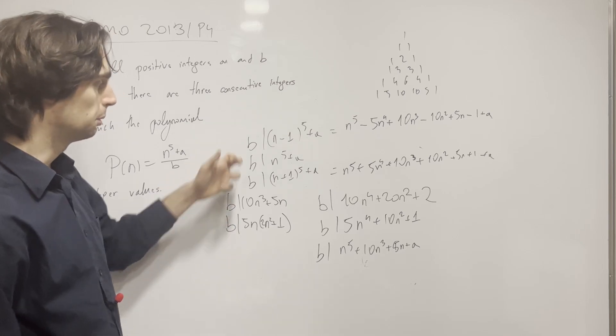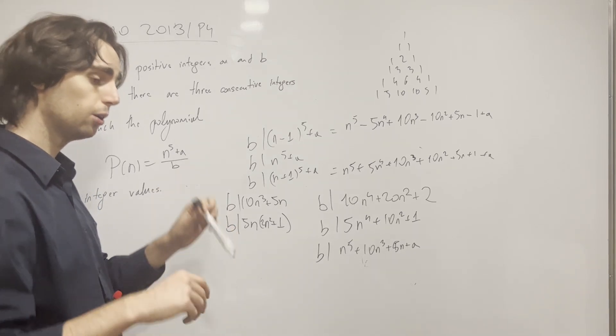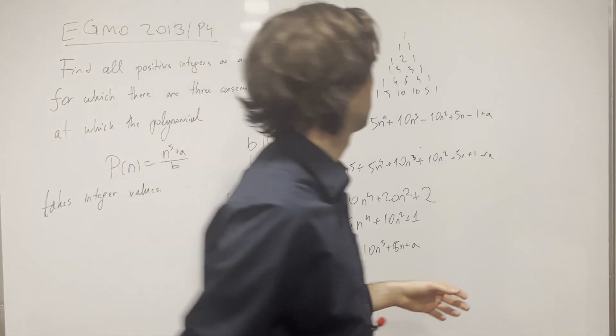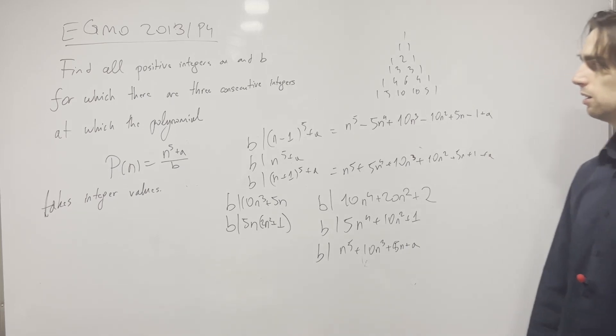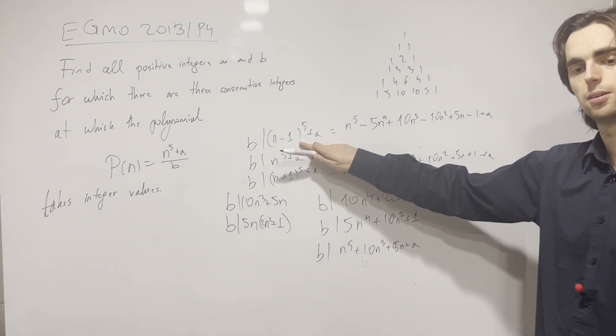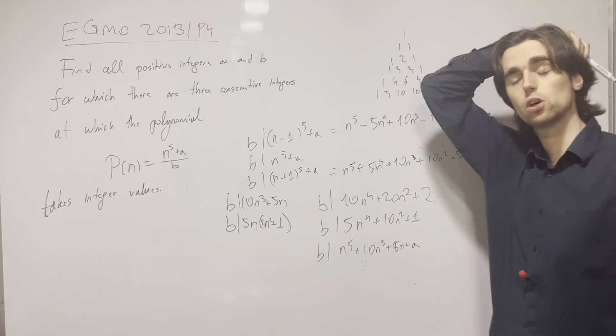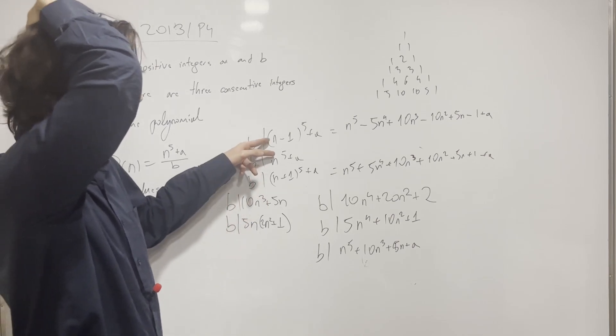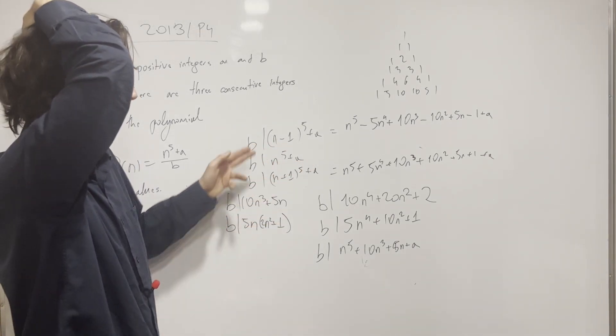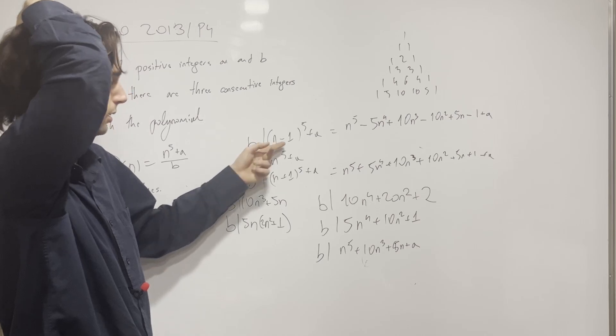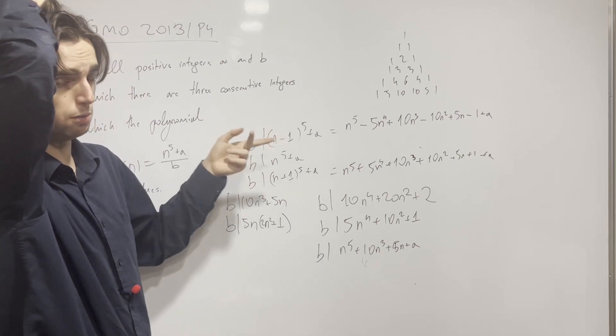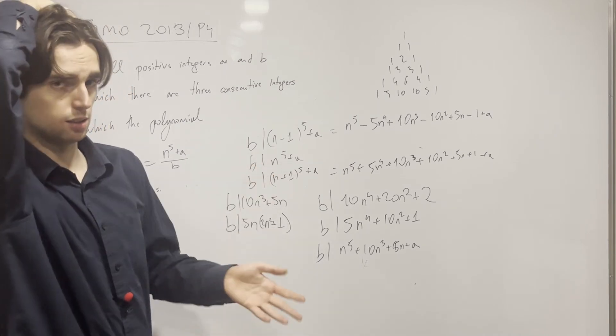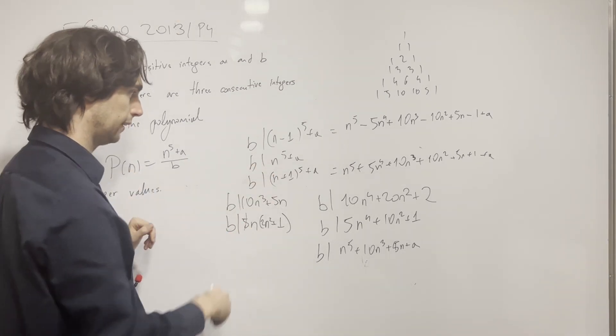Now, does b have anything in common with 5? Pause for two minutes and figure that out. If 5 divided b, we would have, what is this congruent to modulo 5? Well, n^4 is congruent to 1 modulo 5, unless n is divisible by 5, which means n^5 is congruent to n modulo 5. You have then 5 divides 1 once you subtract. Not true.